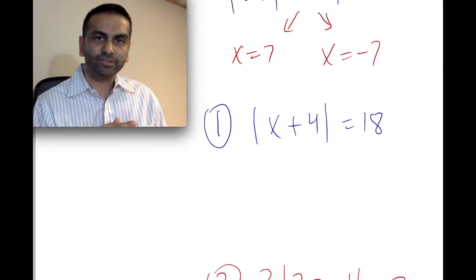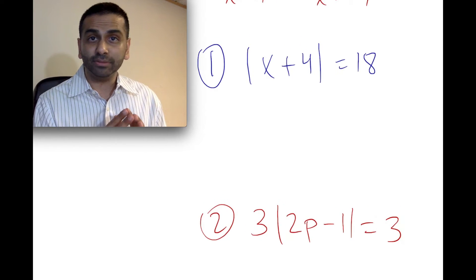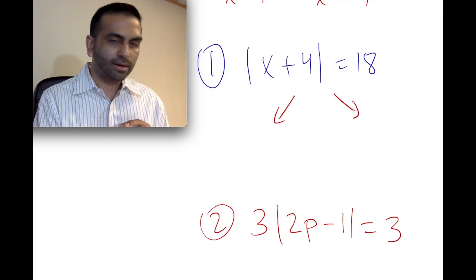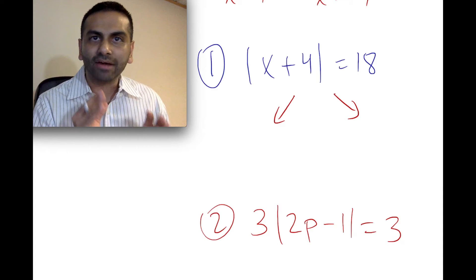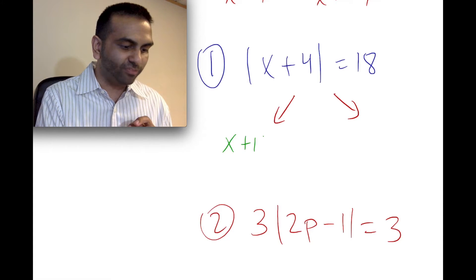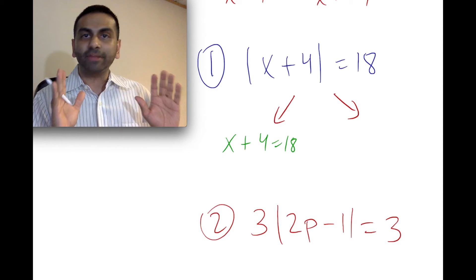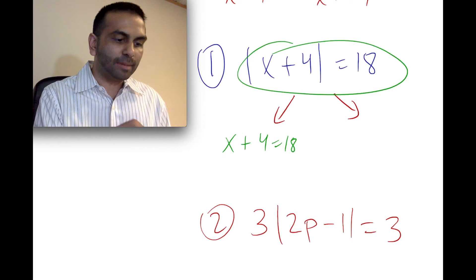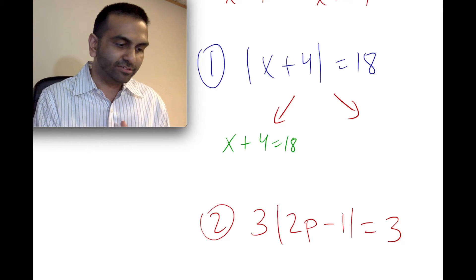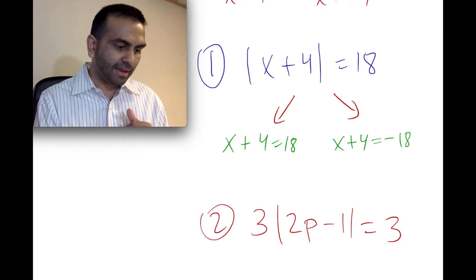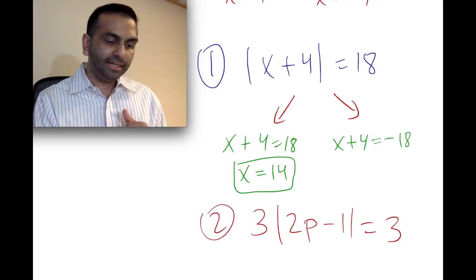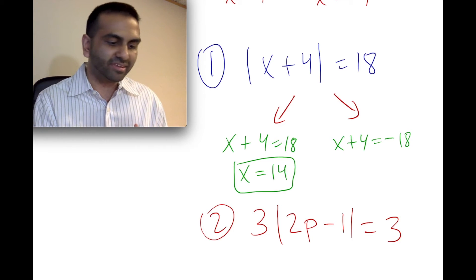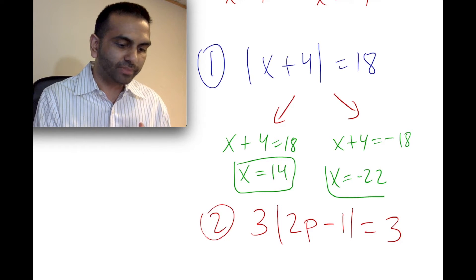Let's do an example problem. We have absolute value of x plus four equals 18. Procedurally to solve this, there are two possible answers. The first is without even thinking, write down the equation without the absolute values: x plus four equals 18. The other version is the same thing except setting it equal to the negative of the right-hand side: x plus four equals negative 18. Solving the first by subtracting four from both sides, we get x equals 14. And here, negative 18 minus four is negative 22, so x is negative 22. Those are our two answers.